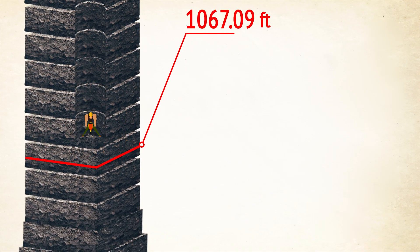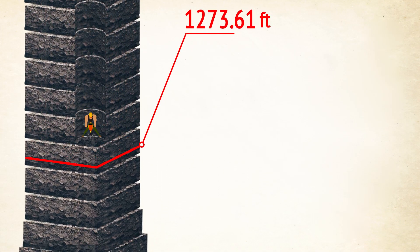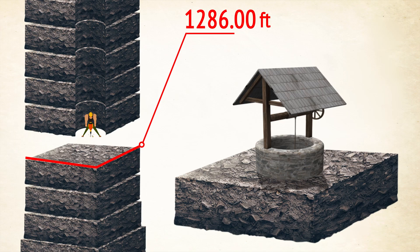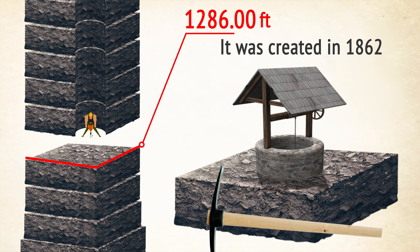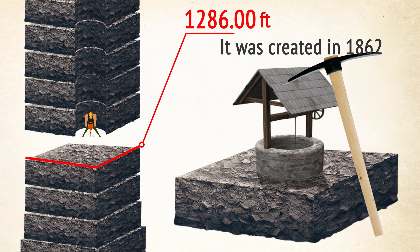At a depth of 1,286 feet, we'll see the deepest hand-dug water well. Woodingdean Water Well is located near Brighton, UK. It was created in 1862 and is also likely to be the deepest hole in the world ever dug without the use of any technology.